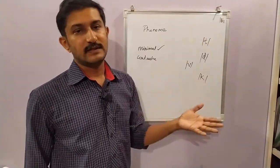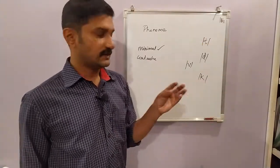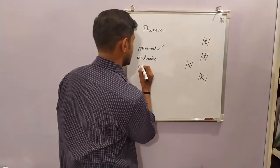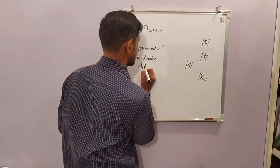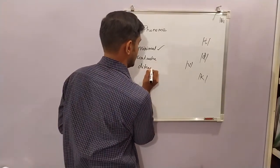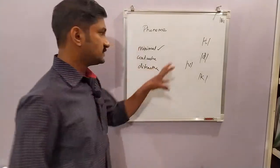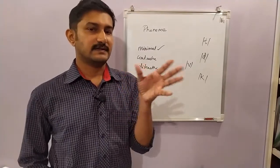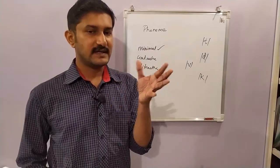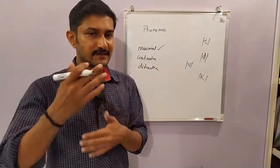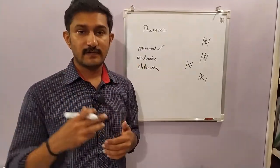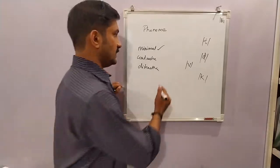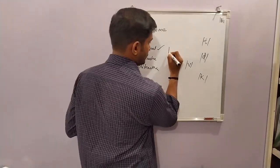A phoneme is contrastive and also distinctive. Distinctive means each one has a distinctive character — in the sense that if we substitute one sound with another, it causes a change in meaning. Let us take an example.